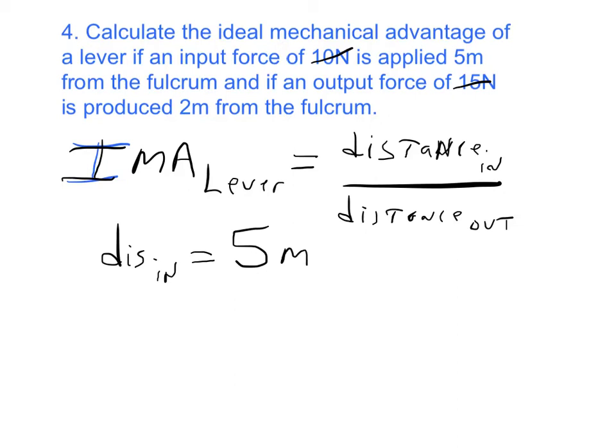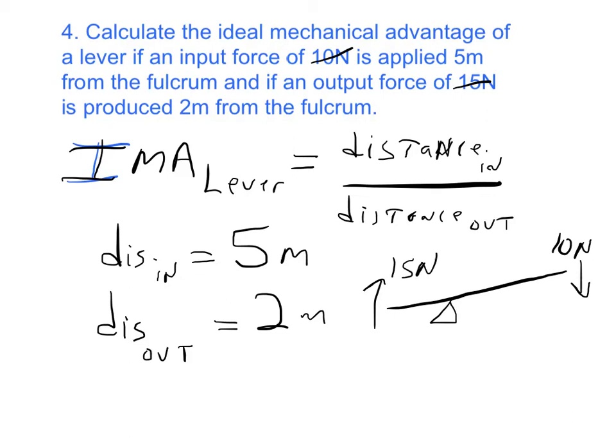And then an output force, the distance out, is produced 2 meters from the fulcrum. So if you can imagine, here's our lever, there's our fulcrum where it's going to pivot. There's this 10 newton force being applied here, producing 15 newtons of force here. This distance is 5 meters and this distance is 2 meters. So there's our lever at work.